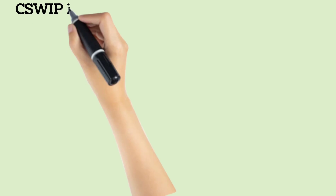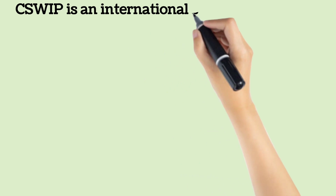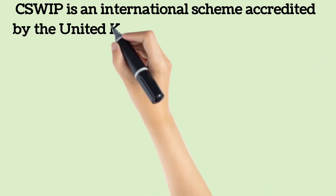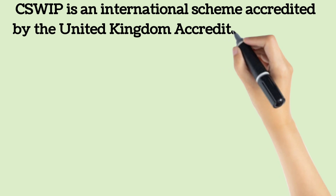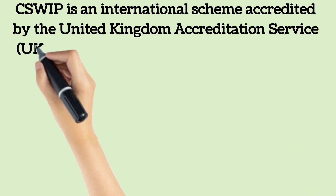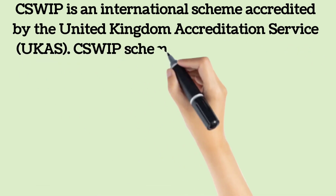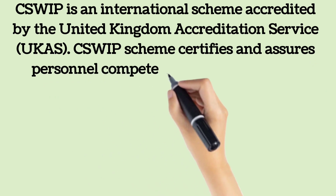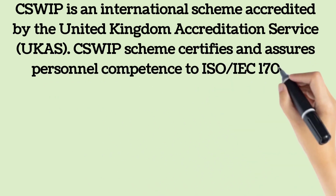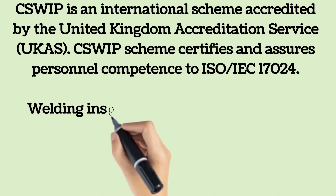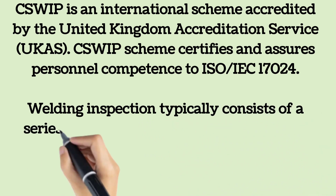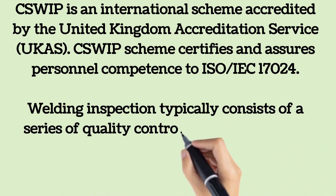CSWIP is an international scheme accredited by the United Kingdom Accreditation Service, UKAS. The CSWIP scheme certifies and assures personnel competence to ISO 17024. For instance, personnel engaged in welding, joining, materials integrity and inspection in manufacturing, construction, operation or repair of high-integrity structures, plant or machinery.